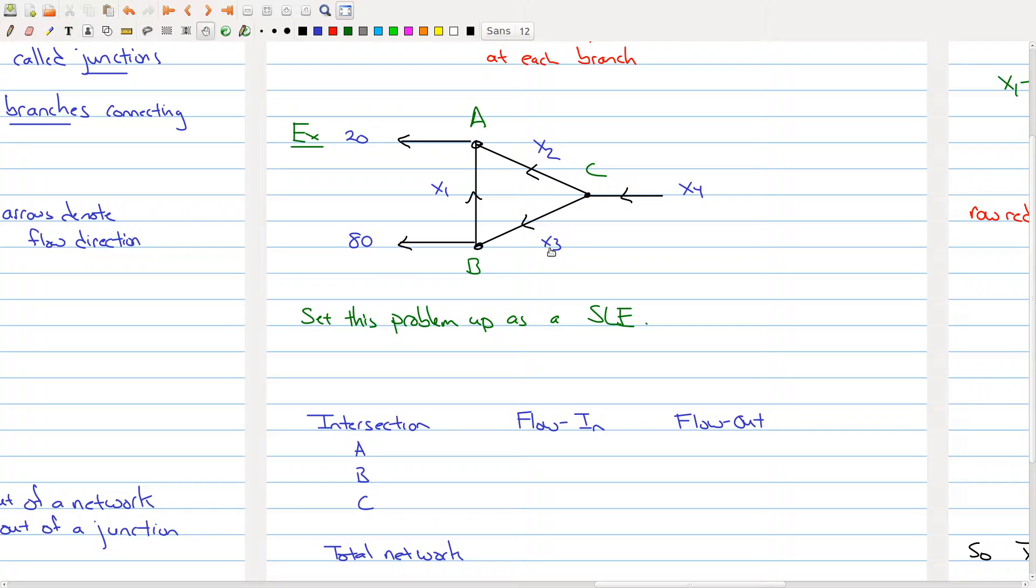We're going to look at this junction by junction. So we'll look at junction A. What is the flow in? Well, the flow in is equal to x1 plus x2, coming in this direction and coming in this direction, and the flow out is 20.